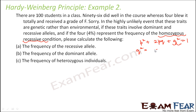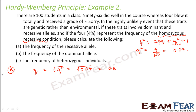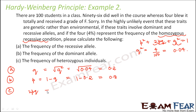As per the question, q² = 4% = 0.04. In part A, frequency of recessive alleles: q = √0.04 = 0.2. Frequency of dominant alleles: p = 1 − q = 1 − 0.2 = 0.8. In part C, frequency of heterozygous individuals = 2pq = 2 × 0.8 × 0.2 = 0.32. This is how we calculate the various frequencies of different alleles.